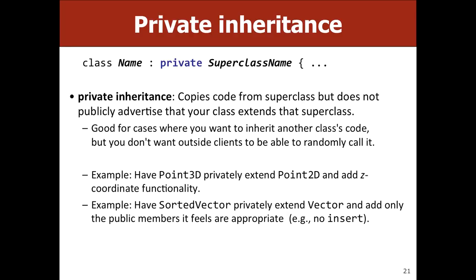There is something called private inheritance. When you say 'class Lawyer : public Employee,' that's public inheritance — the client can call any Employee methods on a Lawyer object. Private inheritance means you get all the code but the methods aren't exposed publicly. If Lawyer privately extends Employee, clients cannot call Employee methods on a Lawyer object unless Lawyer explicitly defines those methods.